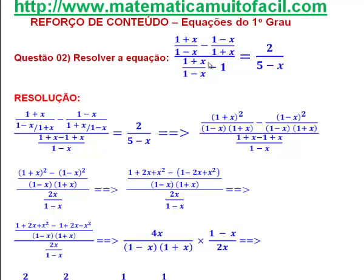Sobre 1 mais x, 1 menos x, menos 1. Isso é igual a 2 sobre 5 menos x. E aqui, já que nós estamos tratando de equações fracionárias, é importante a gente verificar as limitações.